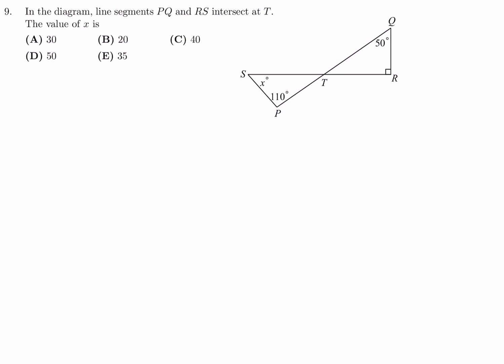In the diagram, line segment PQ and RS intersect at T. The value of X is. Well, this is a right angle — that symbol — so that's 90. So if I call it Y, Y plus 50 plus 90 is equal to 180 degrees. So that means Y is 40.